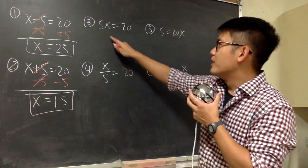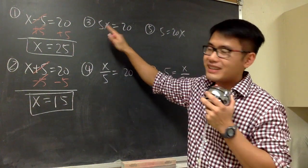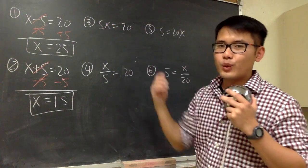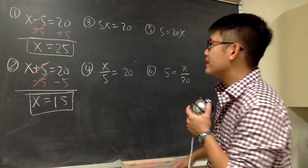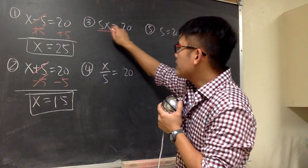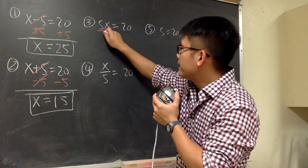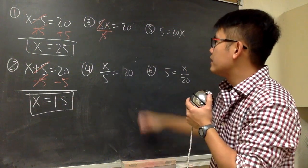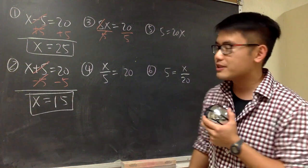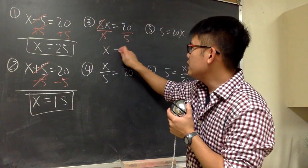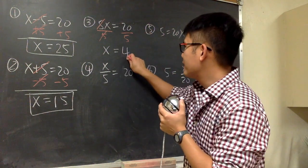Next, we have 5x is equal to 20. First, we have to know what this means — it means 5 times x. So what should we do? The opposite operation of multiplication is division. I'm going to draw an underline to show we are going to divide. We divide both sides by 5, so this and that will cancel. We just have to work it out: x equals 20 over 5. 20 divided by 5 is 4. That's it.